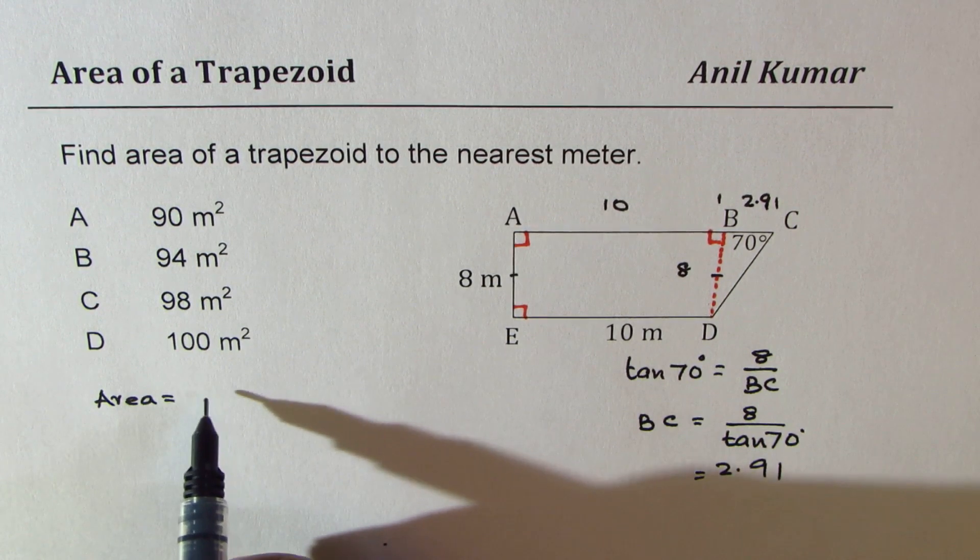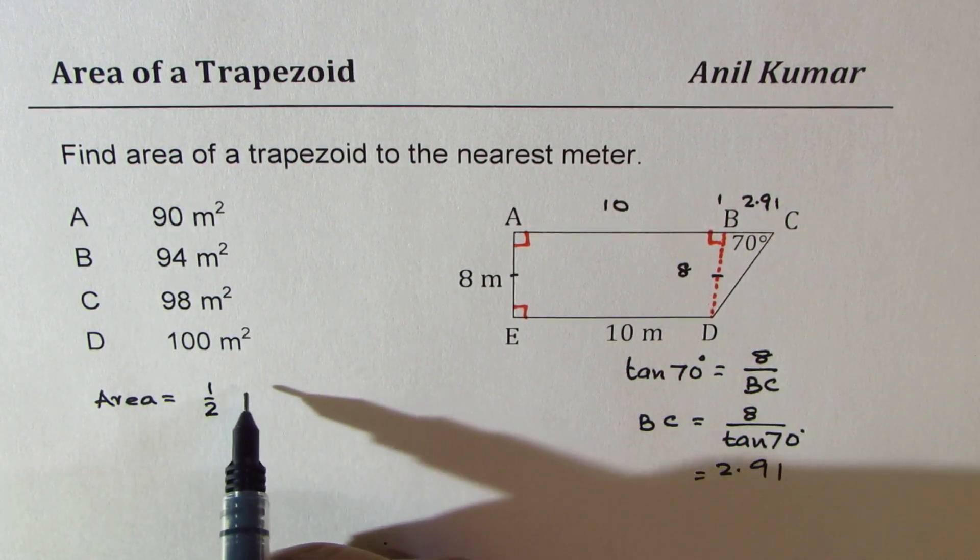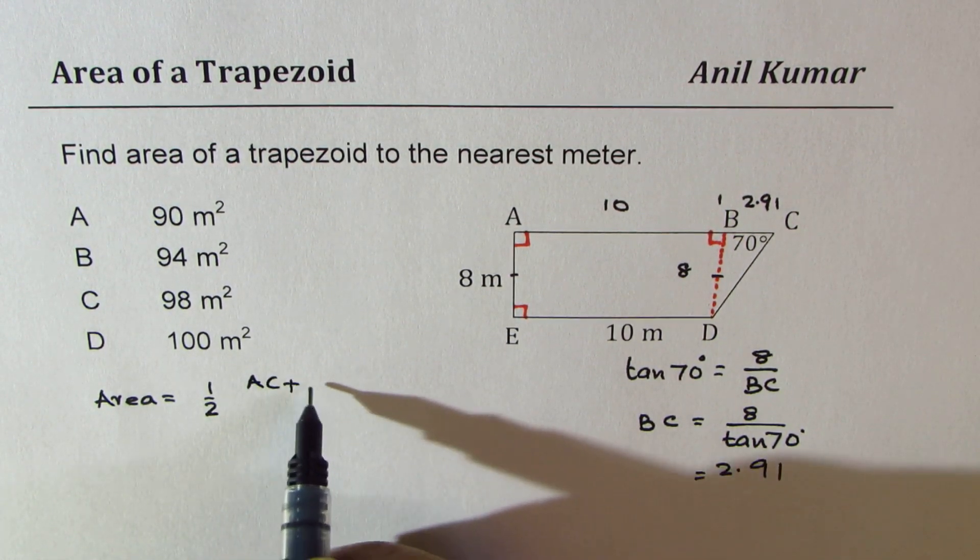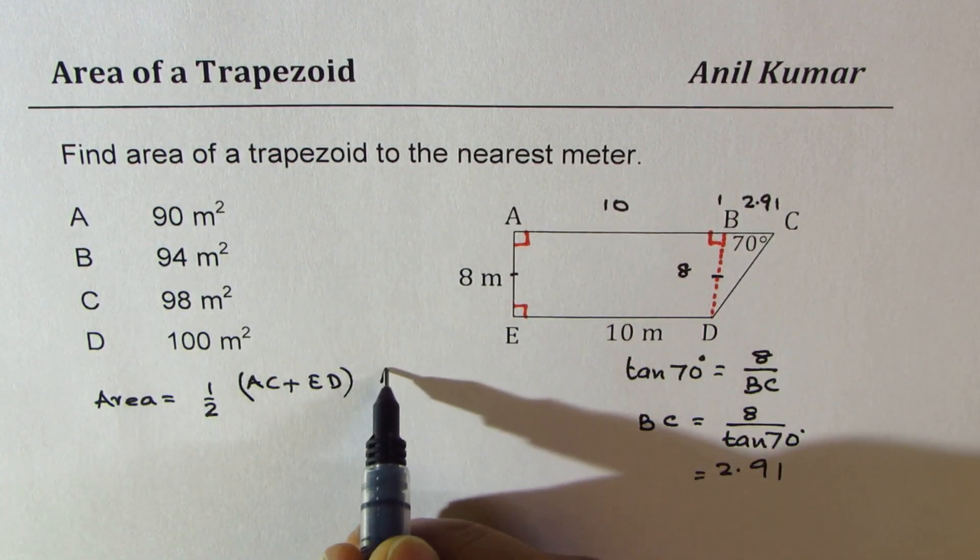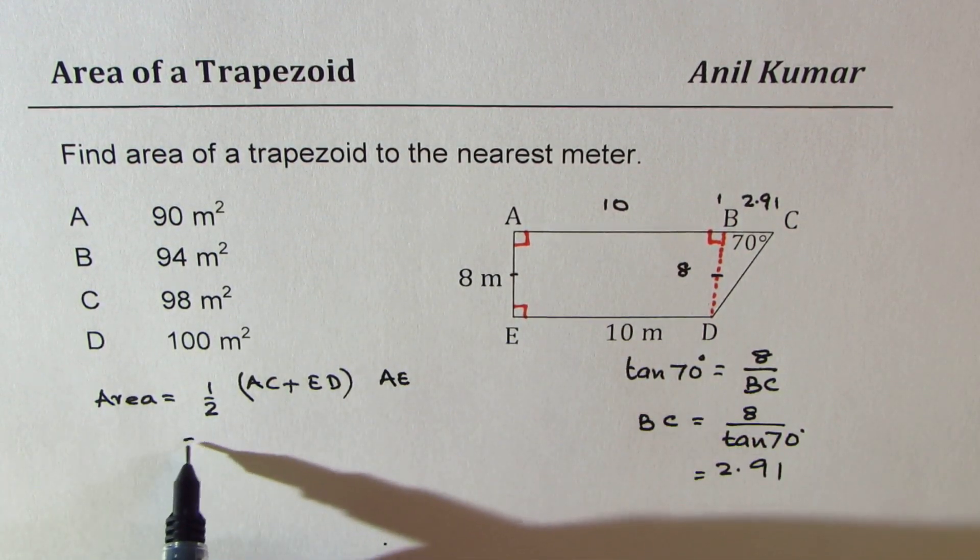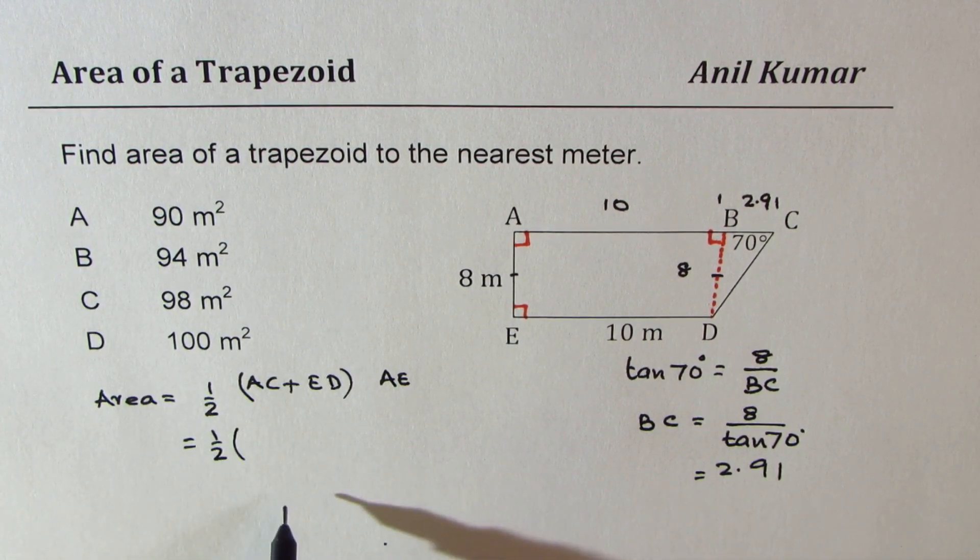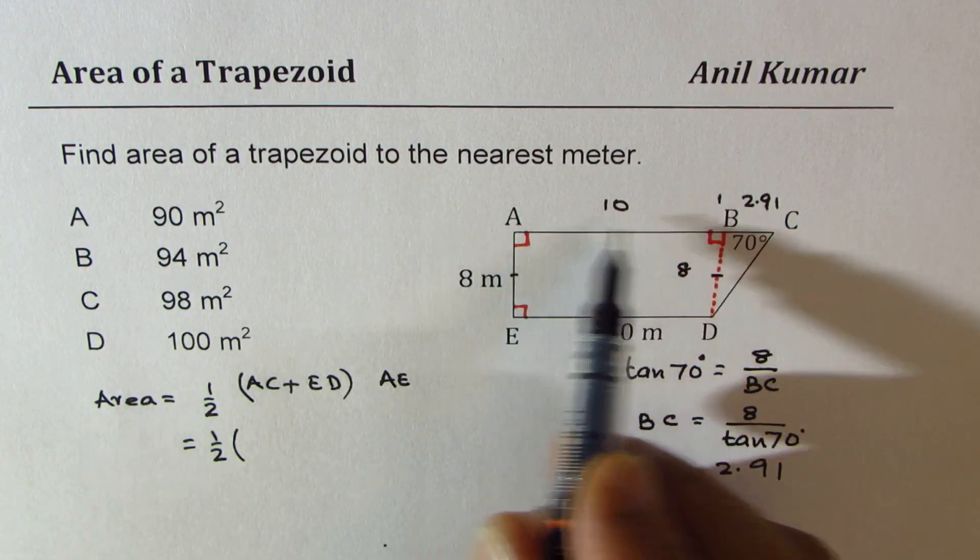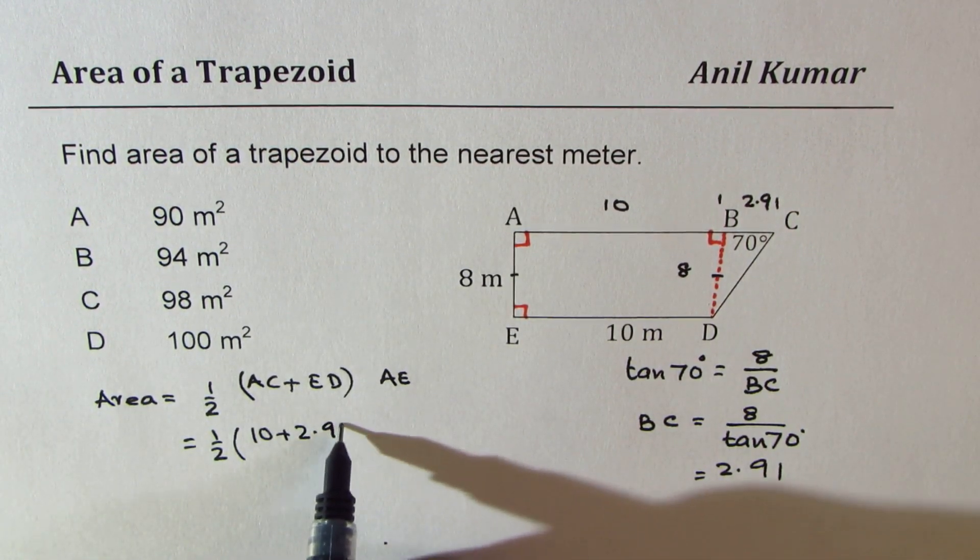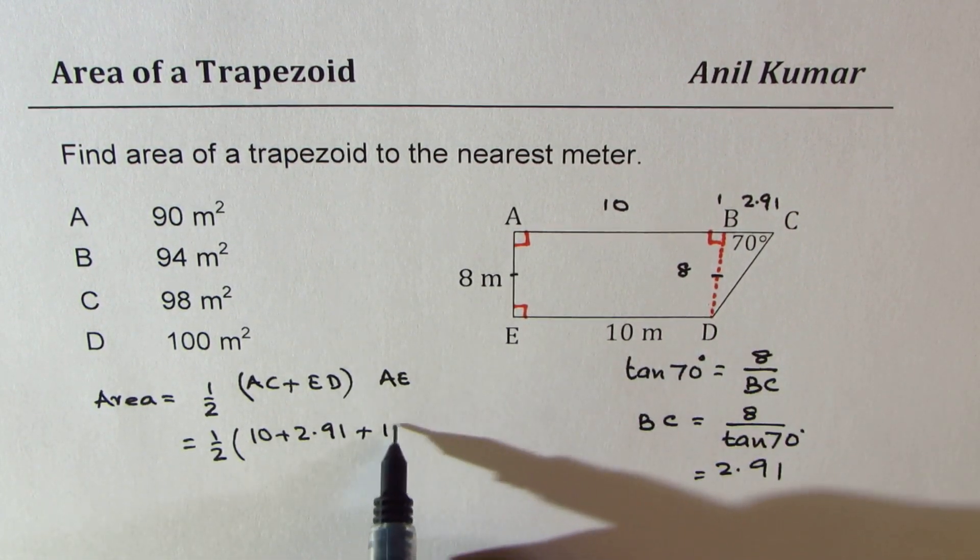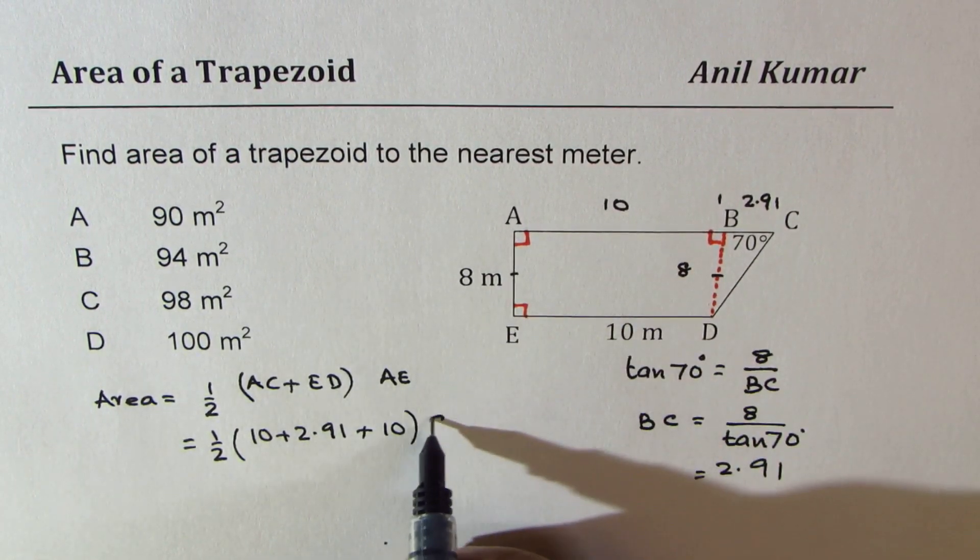So area of a trapezoid is half of AC plus ED times height which is AE. Substituting the values we get half of AC is 10 plus 2.91. AD is given to us as 10 and AE is 8.